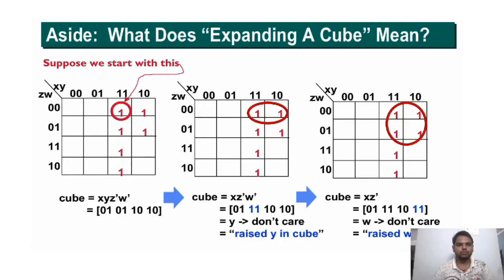Now, what does expanding a cube mean? Suppose we start with the cube 0011, named XYZ̄W̄. For expanding this cube, there is a heuristic by which we can go downward or rightward. I select rightward direction and expand the cube. After expanding, Y becomes don't care. Similarly here, I expand the cube in downward direction and W becomes don't care. Similarly, we have done expansion.